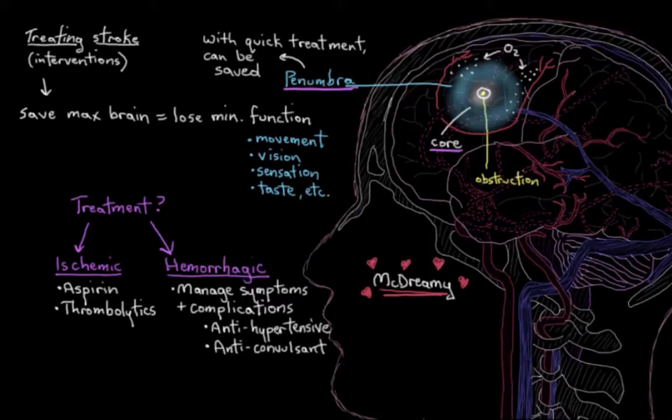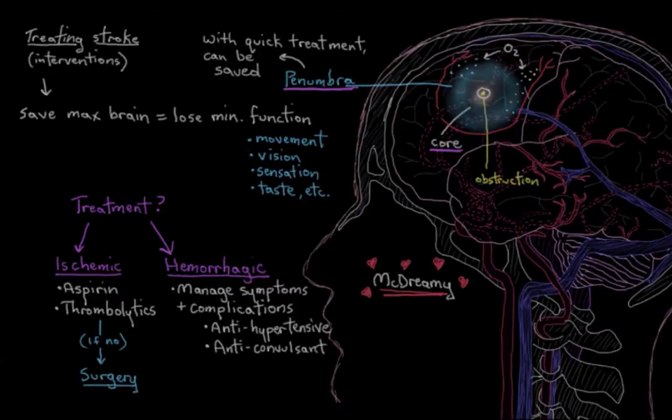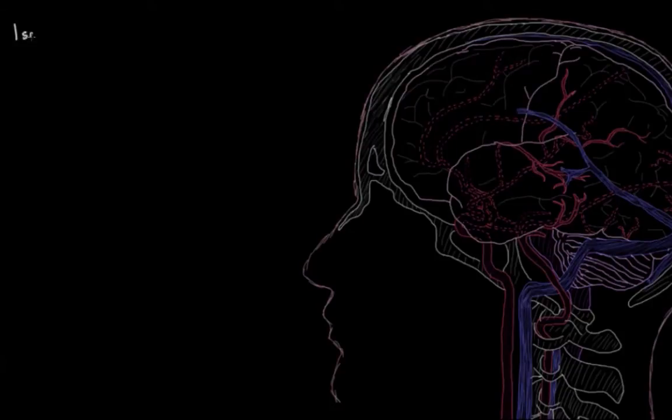In the case of ischemic strokes, surgeons won't usually be called unless the patient isn't responding to thrombolytics. Thrombolytics are usually tried first if the patient's still within the few-hour window they work best in. Otherwise, surgeons might perform one of a few different procedures with the ultimate goal of removing the clot that caused the stroke.